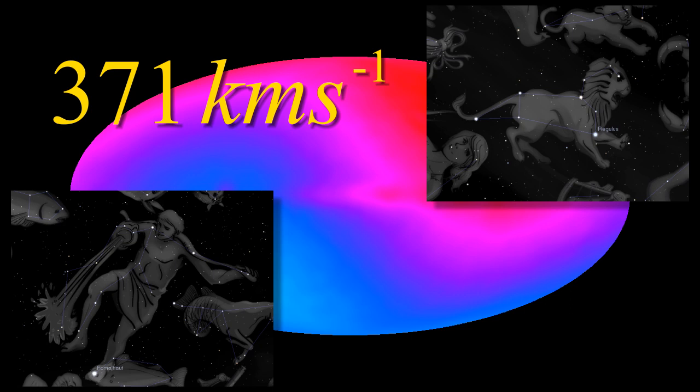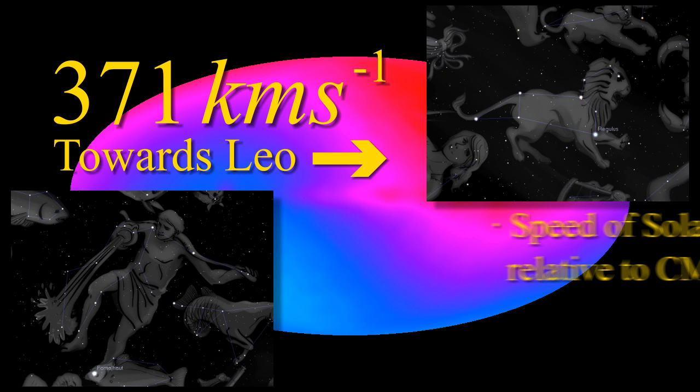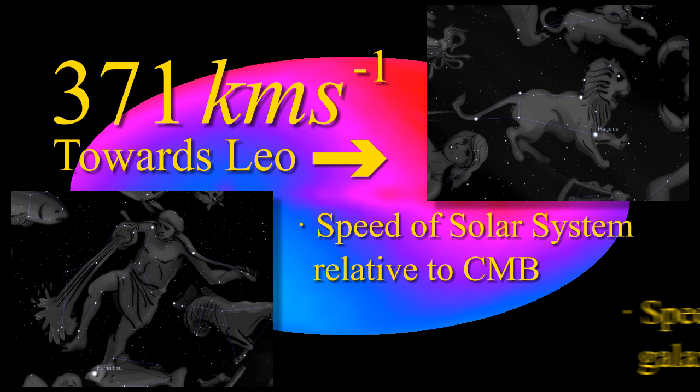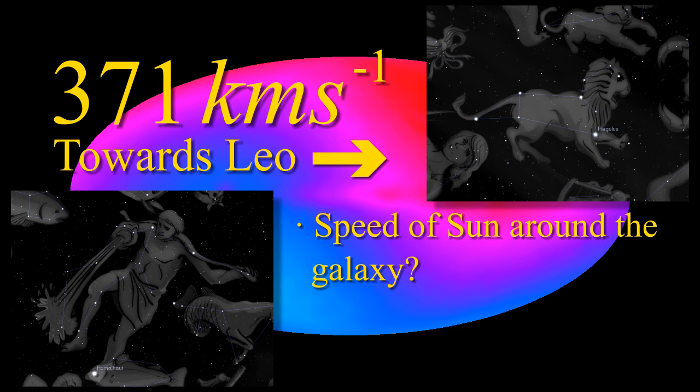This is the speed of our solar system relative to the background radiation of the universe. One might expect this motion to be that of the solar system around the galaxy, and whilst that is one component of the overall velocity seen in the CMB, it is not the sole cause. The velocity measured in the CMB is in the opposite direction, and too high.